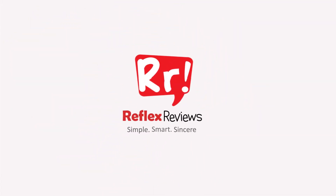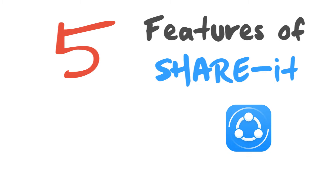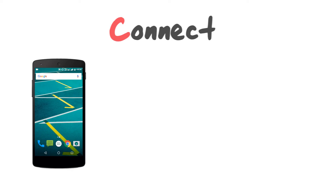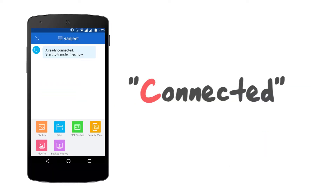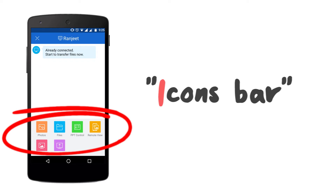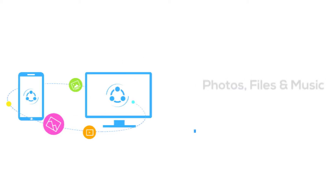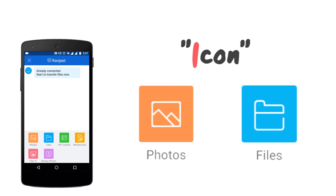Hey everyone, today we will be discussing five features of the SHAREit app when it is connected to a PC. Let's begin by connecting a mobile phone with the PC using SHAREit. Once connected, we can see a small icon bar below in the phone screen — this is a feature included in SHAREit's new update. Let's explore them one by one. The first two icons, named Photo and Files, are associated with SHAREit's basic function.